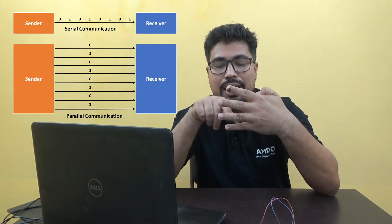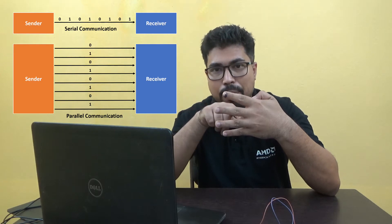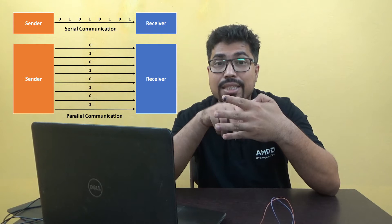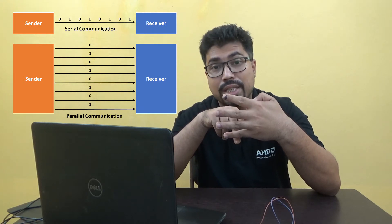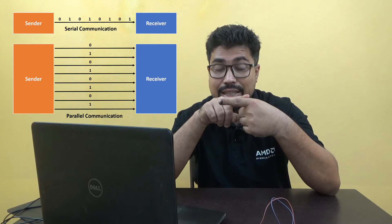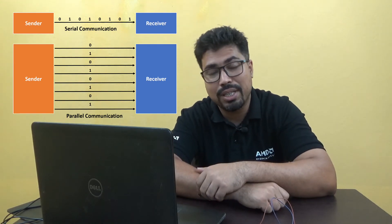Before we discuss serial and parallel communication, we are going to talk about serial communication. This uses 1 wire and 1 bit at a time. Parallel communication uses 4 wires. This is the difference between serial and parallel communication.